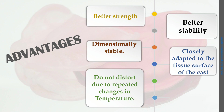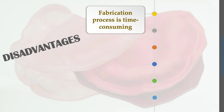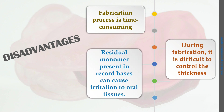Disadvantages of self-cure resin: the fabrication process is time consuming compared to shellac record base. During fabrication it is difficult to control thickness. Residual monomer present in the record base can cause irritation to oral tissue. To overcome this, after making a record base or custom tray, place it in water for 24 hours so the excess monomer dissipates.